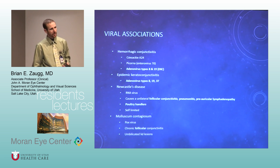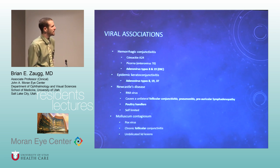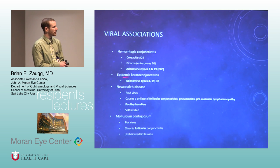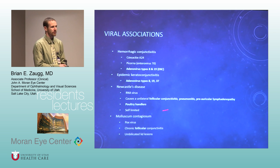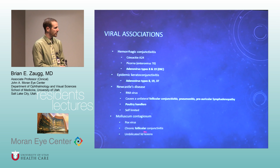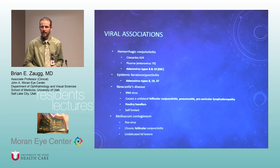For viral conjunctivitis on tests: hemorrhagic conjunctivitis — Coxsackie is a common one, and EKC will come up. They'll sometimes ask about the viral types for EKC. Newcastle's disease is rare, usually in people dealing with chickens. Molluscum is a very common test question — it's a pox virus, causes chronic follicular conjunctivitis, so look for the lesion on the eyelid.